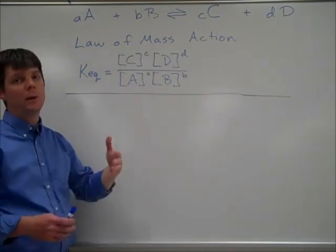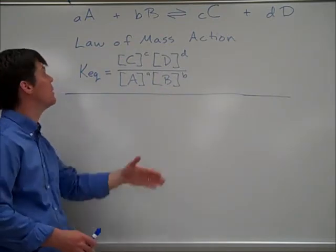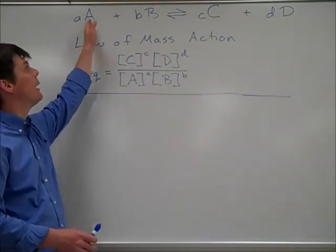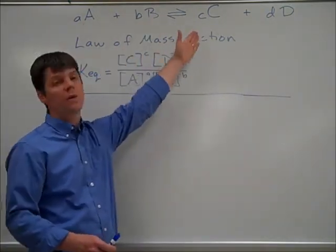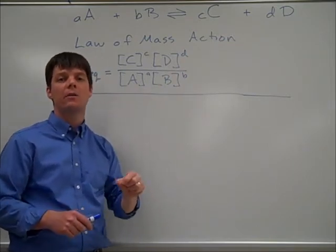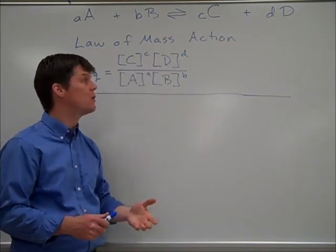Now, please note the difference between capital letters and lowercase letters in this. The capital letters, these would indicate either A and B, reactants, or C and D, products in the chemical process. The lowercase letters would indicate the coefficients of a balanced equation.